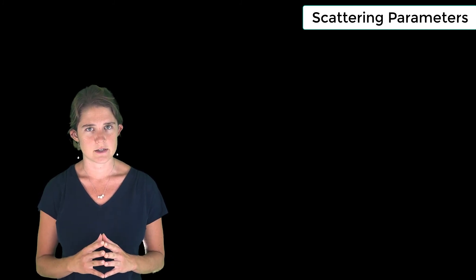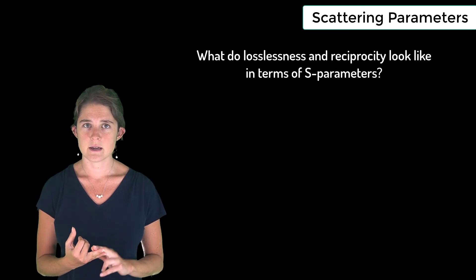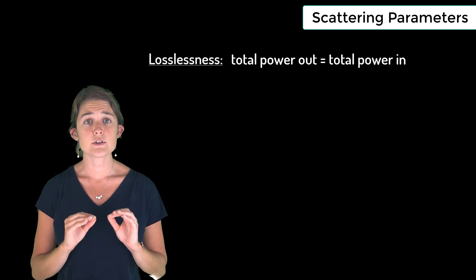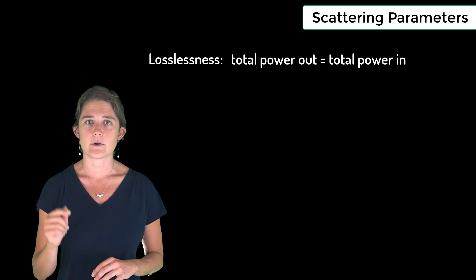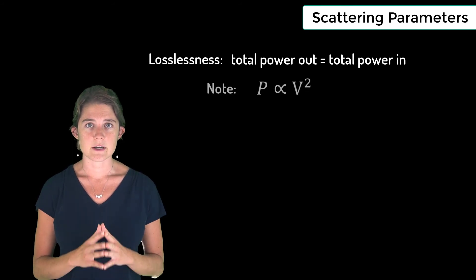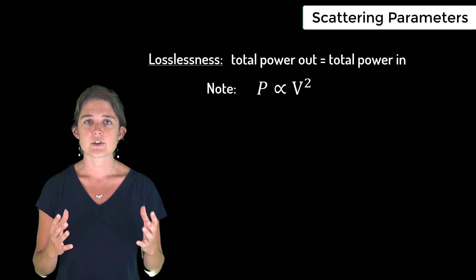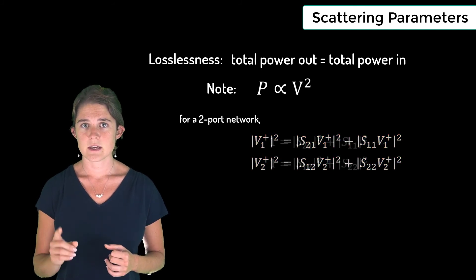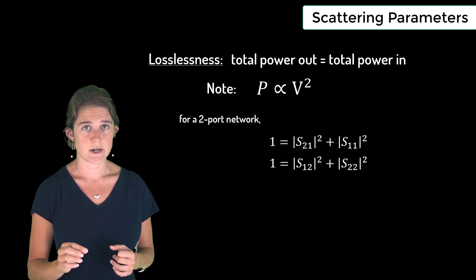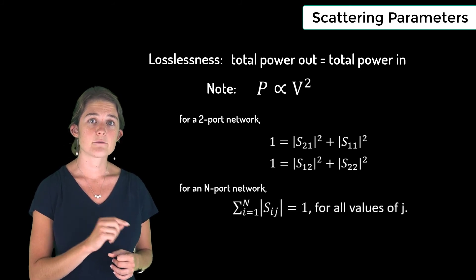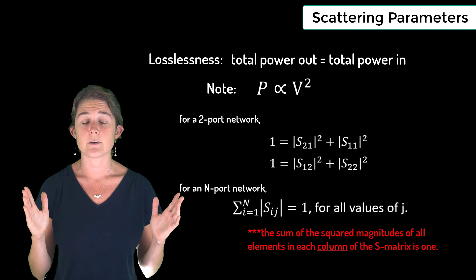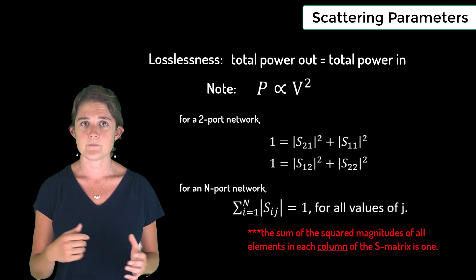Now before we leave S-parameters, let's look at two possible circuit characteristics: losslessness and reciprocity. In terms of the S-parameters, if a network is lossless, the total power leaving the system must equal the total power entering the system. Power is related to the square of the voltage, so the sum of the squares of the output voltage magnitudes has to equal the square of the input voltage magnitude. This translates to this relationship for a two-port network. This can also be written like this for an N-port network. In other words, if a network is lossless, the sum of the squared magnitudes of all the elements in a column of the S matrix is equal to one.